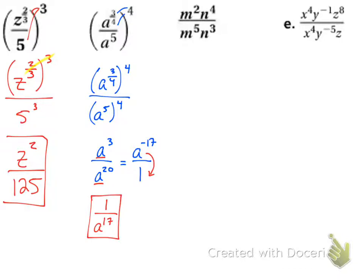The next one — no negative exponents, no parentheses — so I can just go ahead and divide. I divide my m's together and my n's together. m squared divided by m to the 5th gives me m to the negative 3rd. n to the 4th divided by n to the 3rd gives me n to the 1st power. Both answers go on the top, so to get my final answer I move the negative exponent down to get n over m to the 3rd.